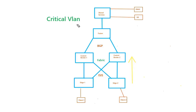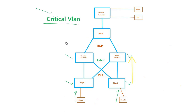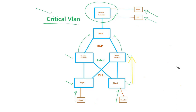Let's quickly review the topology we're going to use to test the Critical VLAN feature in our lab. We have Edge 1 and Edge 2 with Client 1 and Client 2 connected respectively. The edges connect to border and control nodes, and we have two border and control nodes in this topology. A fusion router connects to both borders and has access to the shared services area where ISE acts as the RADIUS server and DNAC is placed.